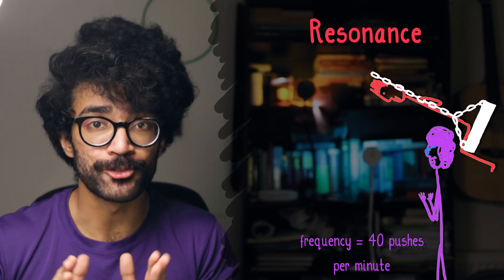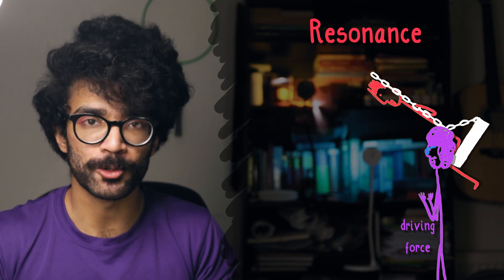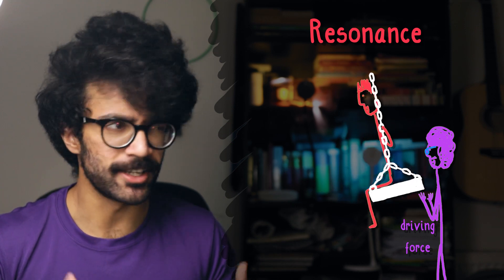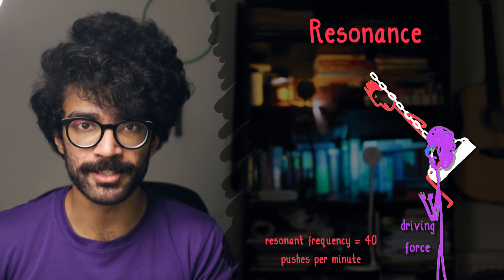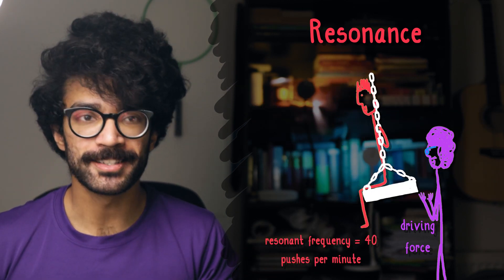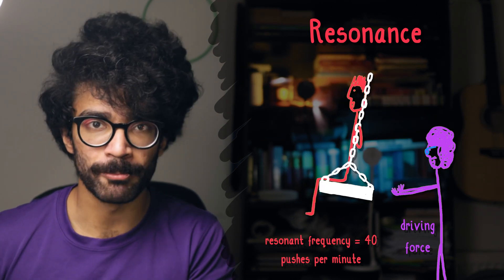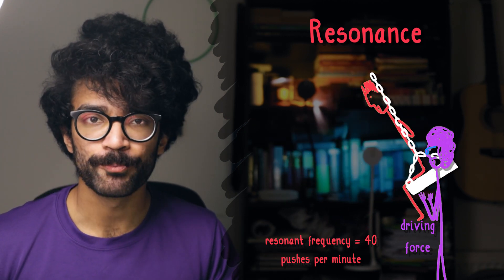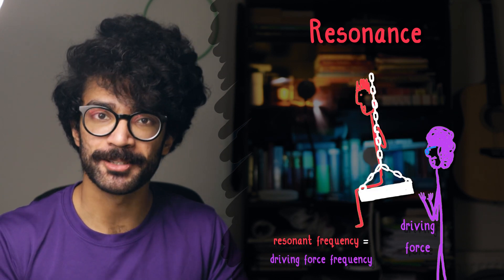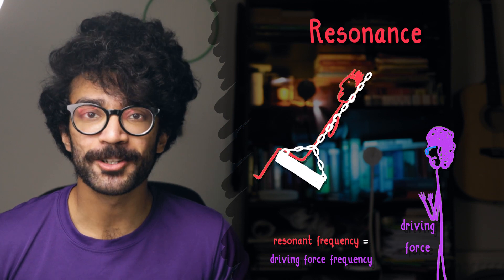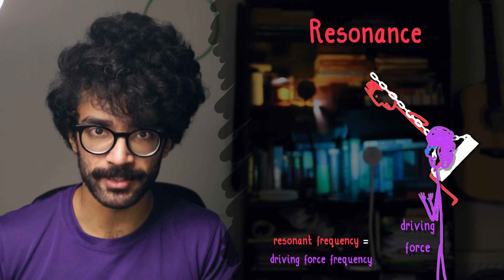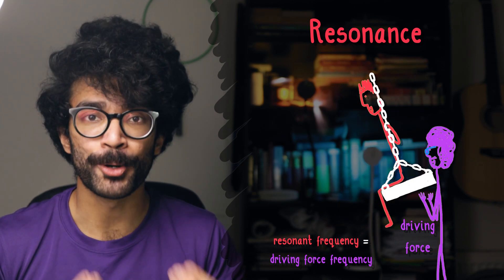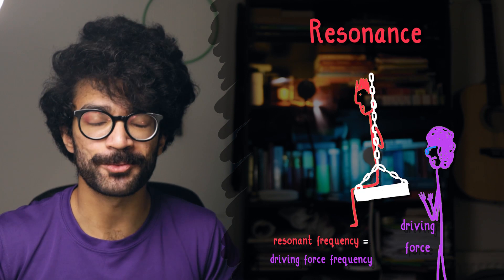This is resonance. We as the pusher are putting a driving force into the swing — the driving force applied by our arms or hands. We're applying this driving force at what is known as the resonant frequency of our swing-and-friend system. There is a particular frequency — a number of swings per second or per minute — that the system naturally wants to undergo. If we, as the pusher, can match this frequency, then we cause the system to undergo resonance. A system undergoes resonance when we apply an external driving force at its resonant or natural frequency.